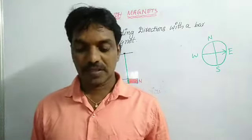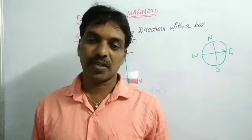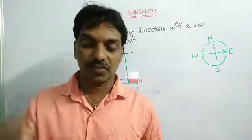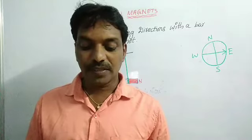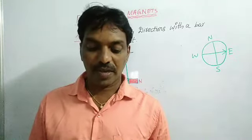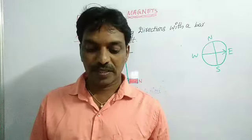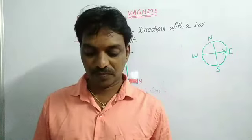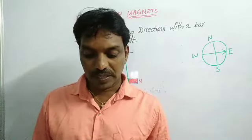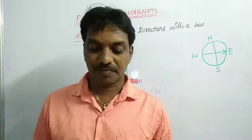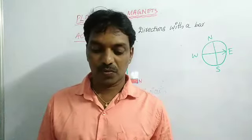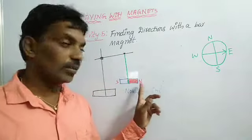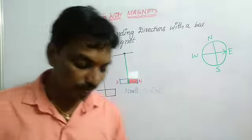Magnets always come to rest in the north-south direction. If we go somewhere, there also we can find the north-south direction. In each case, the marked end points toward the north. This end is known as the north pole of the magnet. The other end which points toward the south is known as the south pole of the magnet. This is the north pole and the other one is the south pole.